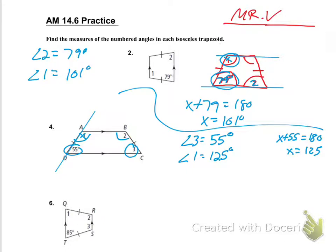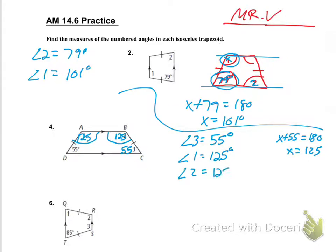If I know that angle three is 55 and angle one is 125, then I know this is 125 as well, because the base angles — whether they're top or bottom — are congruent. So that would mean angle two is going to be equal to 125 degrees as well.